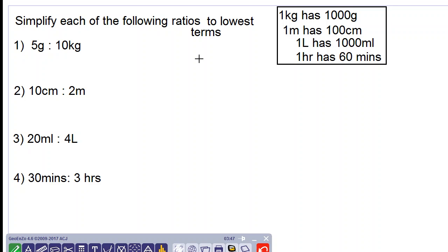Good day everyone, we are asked to simplify ratios that involve units. Let's note these conversions: one kilogram has 1000 grams, one meter has 100 centimeters, one liter has 1000 milliliters, and one hour has 60 minutes.